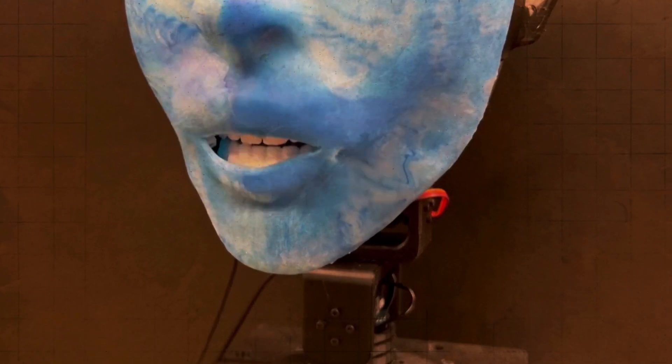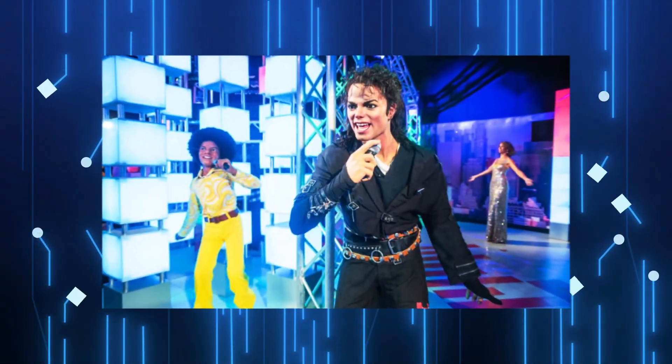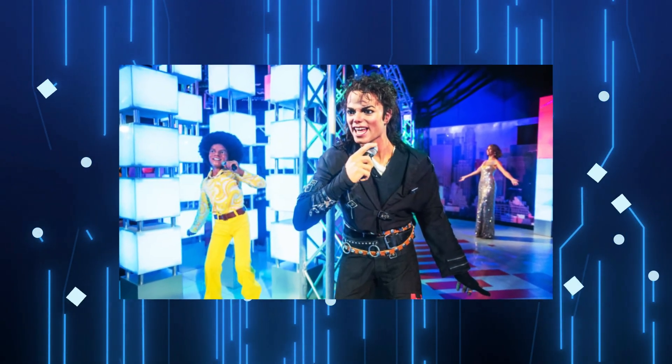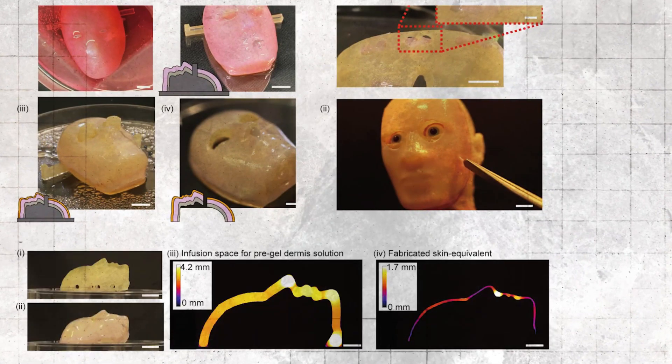Think of those eerily realistic wax figures at Madame Tussauds. They might look incredibly lifelike, but something about them just feels off. The same principle applies to robots. If a robot looks and moves too much like a human, but its expressions or movements are slightly off, it can trigger a sense of unease in us.